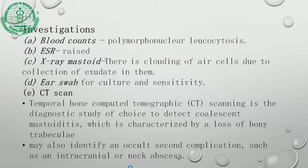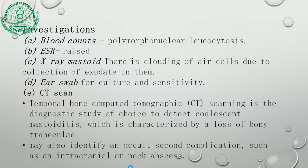Investigations include blood counts showing polymorphonuclear leukocytosis and raised ESR. We do X-ray mastoid — Schuller's views — where clouding of the ear cells due to collection of exudate or pus in the mastoid cells can be seen. Post-aural culture and sensitivity are performed. CT: HRCT temporal bone is the investigation of choice to detect coalescent mastoiditis, which shows loss of bony trabeculae, and may also identify occult secondary complications such as intracranial or neck abscesses.